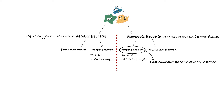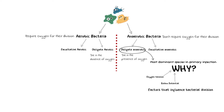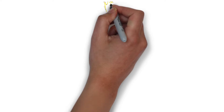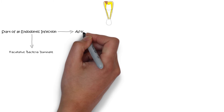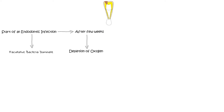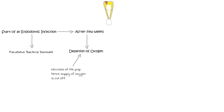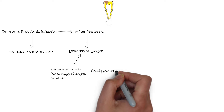The reason obligate anaerobes are most common relates to key factors that influence bacterial growth and composition: oxygen tension, redox potential, type and amount of nutrients available, and bacteria-to-bacteria interaction. When an endodontic infection starts, facultative bacteria dominate the initial phase. After a few days or weeks, oxygen gets depleted in the root canal system for two main reasons. First, the initial attack from facultative bacteria progresses the pulp towards necrosis, cutting the oxygen supply to the pulp. Second, the remaining oxygen stores in the necrotic pulp are consumed and eventually exhausted by the facultative bacteria that initially invaded the pulp.